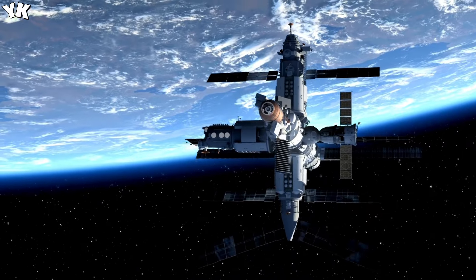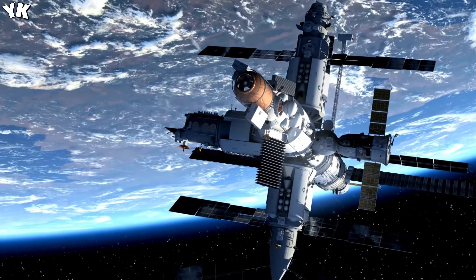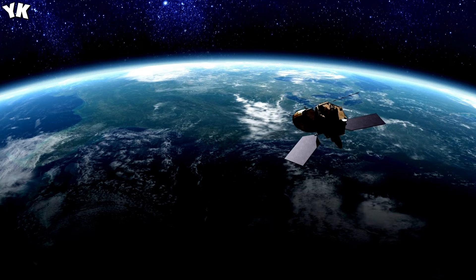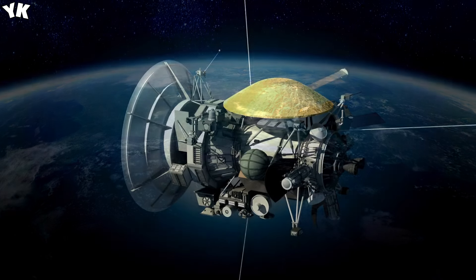NASA uses the deep space network which consists of three antenna complexes equally spaced around the Earth. Each complex has a huge 70-meter antenna along with multiple 34-meter antennae which can be combined to pick up signals that are thousands of times weaker than your standard FM radio signal.